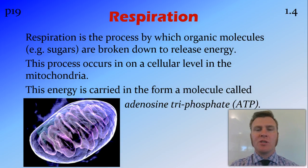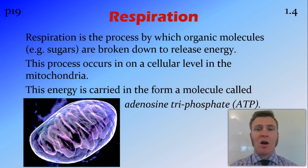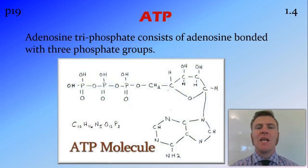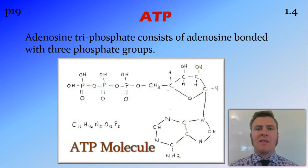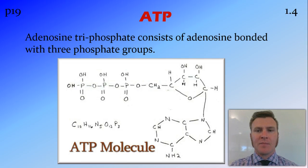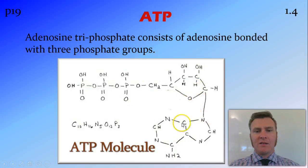When this energy is produced it is carried in the form of a molecule called adenosine triphosphate. Adenosine triphosphate can be thought of as the currency of energy. Anything that involves using energy in the body needs adenosine triphosphate. It consists of an adenosine bonded to one, two, three phosphates.